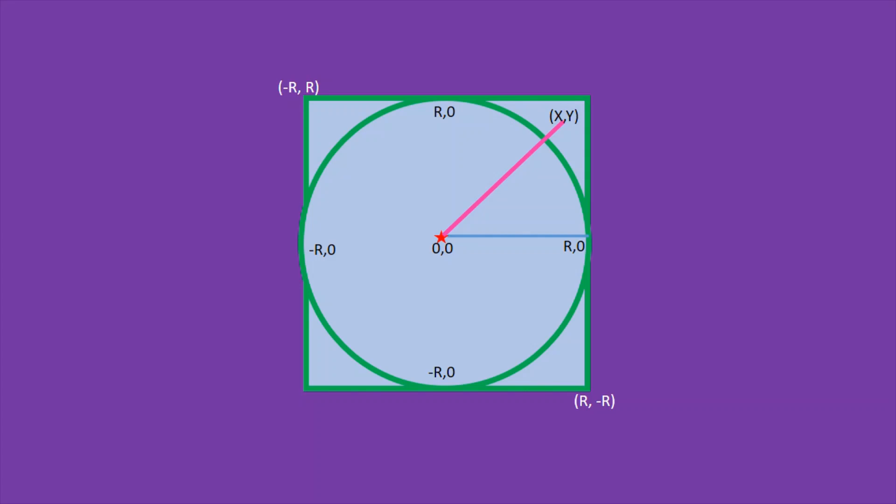Now to determine all the points if they are within the circle or not, we will scan from top left where the coordinates of x is minus r and y is plus r.